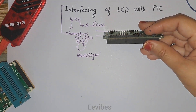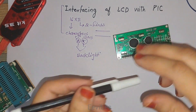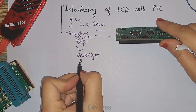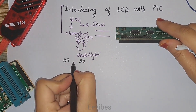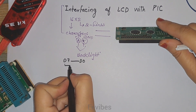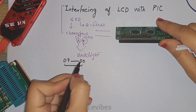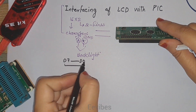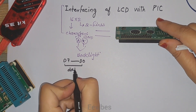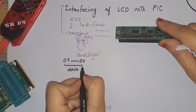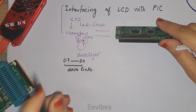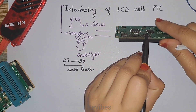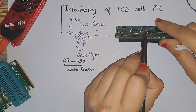The next eight pins of the LCD are marked from D0 to D7. The data that you want to display on the LCD is provided on these pins, so these are basically used for the data lines.